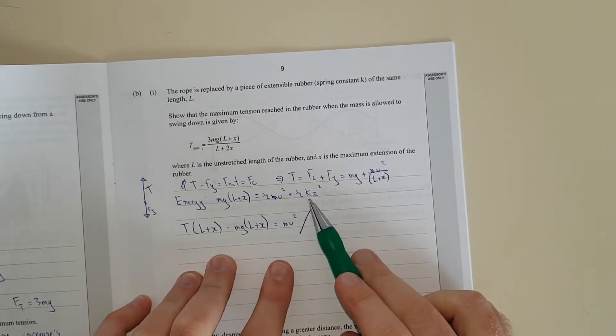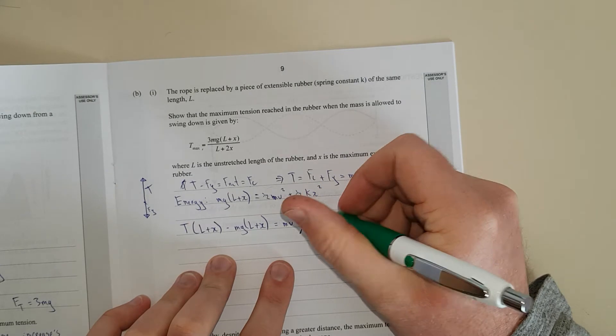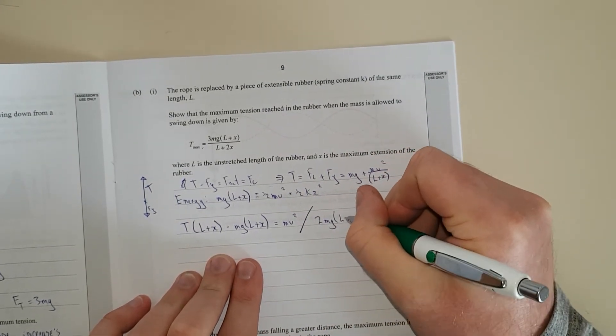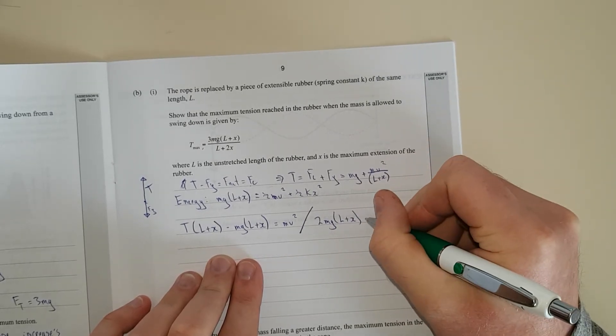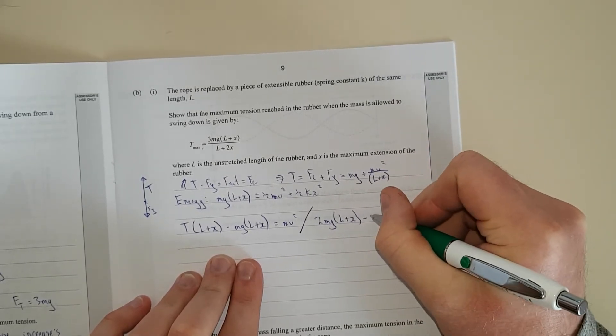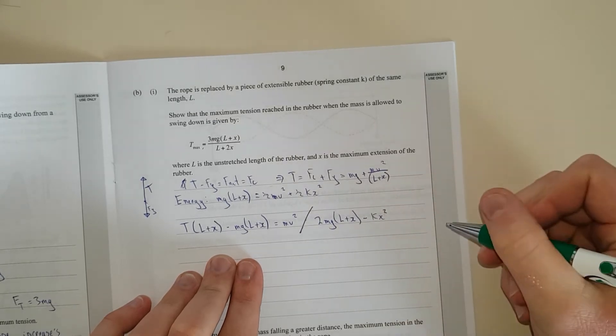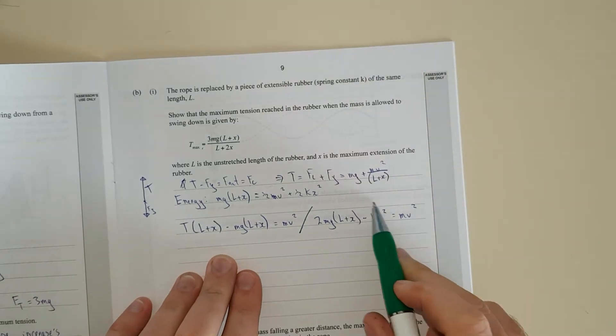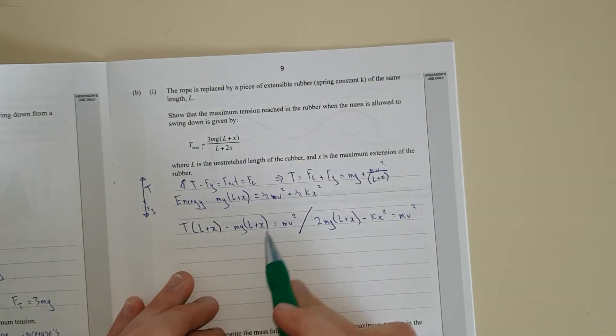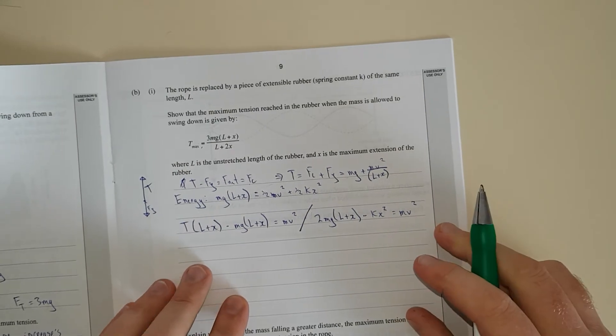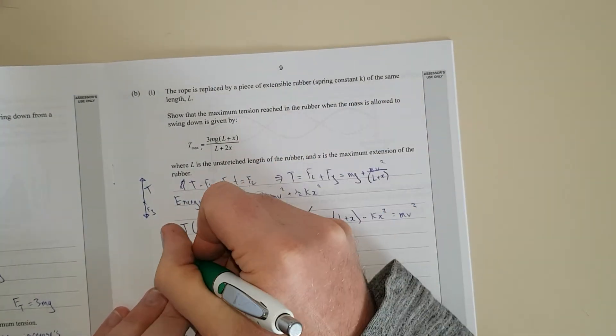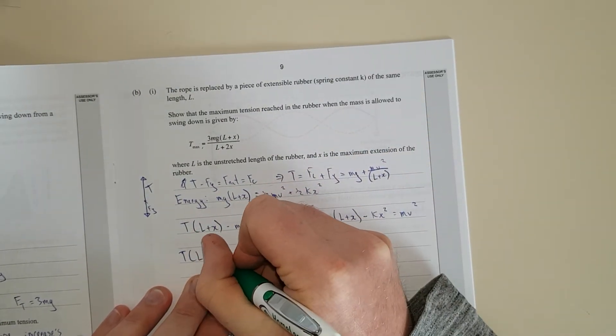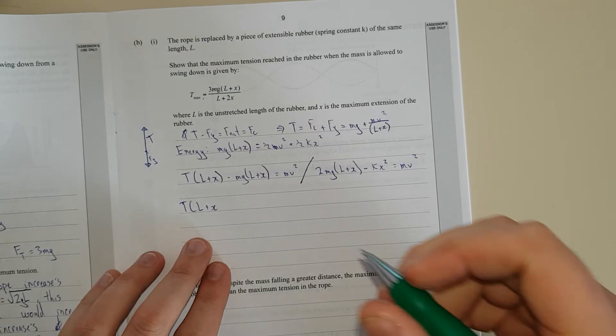And now I'm going to rearrange this in terms of mv squared, so I'm going to have Mg L plus X minus KX squared and that is going to be equal to mv squared. So now we can see that this is going to be equal to that, and we're going to do some sneaky cancellations. So tension L plus X minus Mg L plus X and that is going to be equal to 2Mg L plus X minus KX squared.